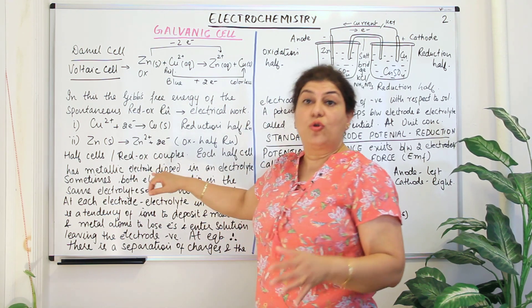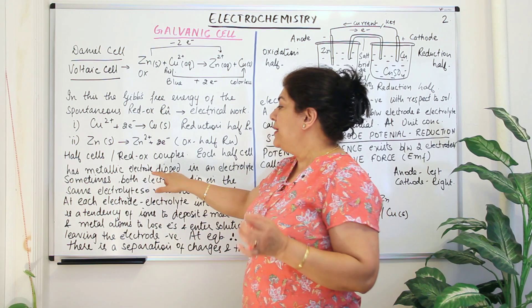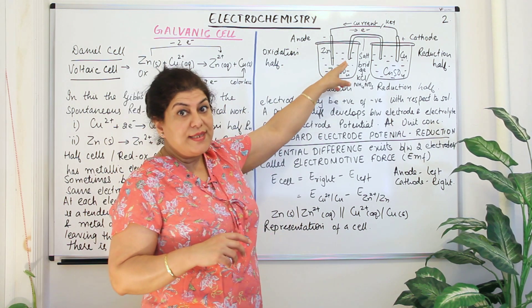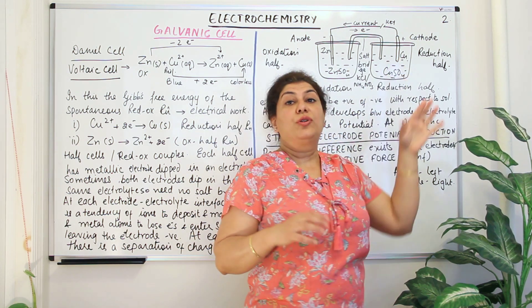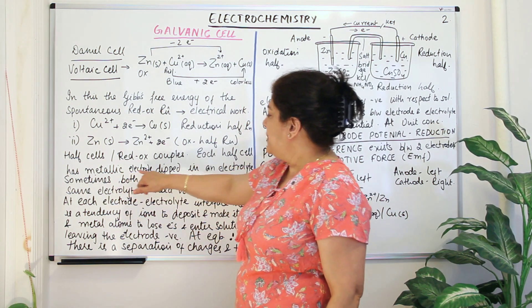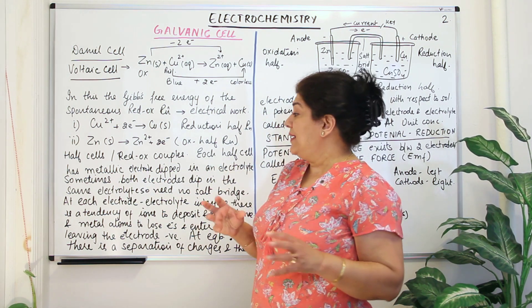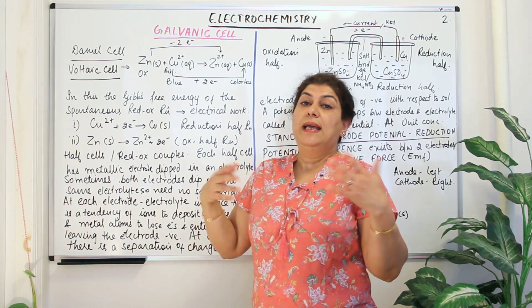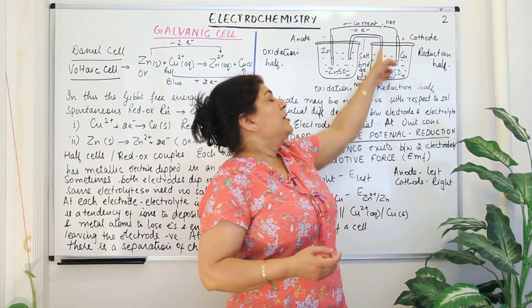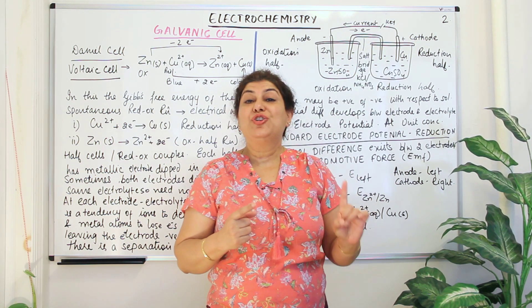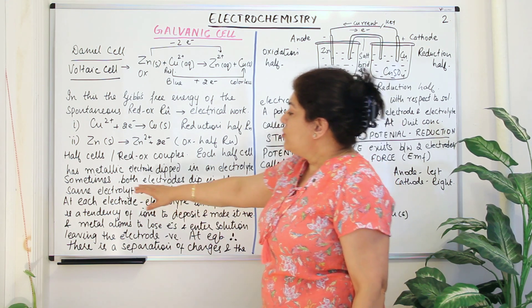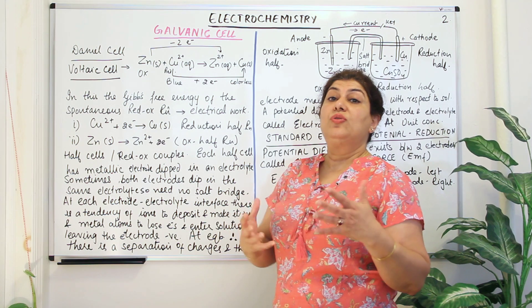So that is how we divide the entire reaction into two halves, separate them, and yet connect them externally. The half cells are also called redox couples, and each half cell has a metallic electrode dipped in an electrolyte. Here the zinc electrode dips in zinc sulphate and the copper electrode dips in copper sulphate solution. Sometimes both electrodes dip in the same electrolytic solution — in that case you do not need a salt bridge, because the ions can transfer freely on their own.